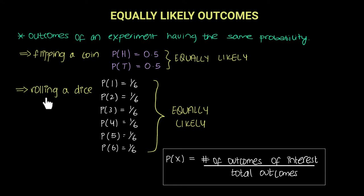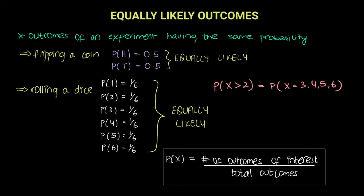For example, let's say we're rolling a dice and the question asks you to find the probability of getting a number greater than 2. So, if we need to find the probability of a number greater than 2, that means we need to find the probability of getting a 3, 4, 5, or 6. Rather than individually finding the probabilities of each outcome, we can simply use this formula to find the probability of getting a number greater than 2.